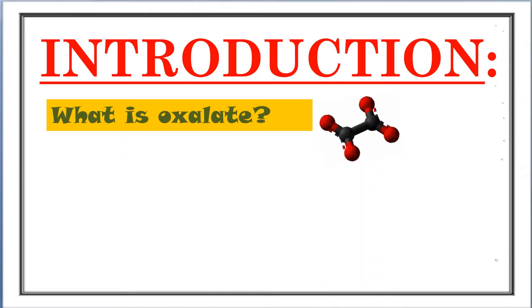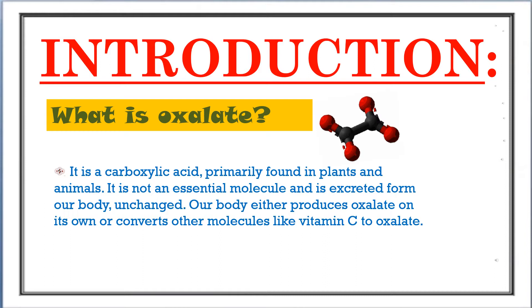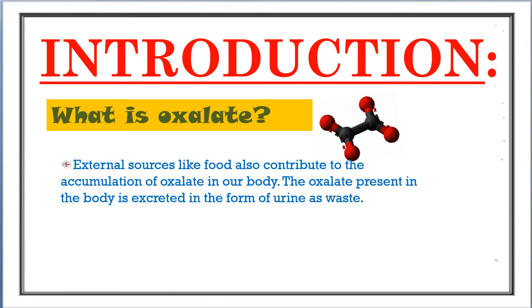What is oxalate? It is a carboxylic acid primarily found in plants and animals. It is not an essential molecule and is excreted from our body unchanged. Our body either produces oxalate on its own or converts other molecules like vitamin C to oxalate. External sources like food also contribute to the accumulation of oxalate in our body. The oxalate present in the body is excreted in the form of urine as waste.